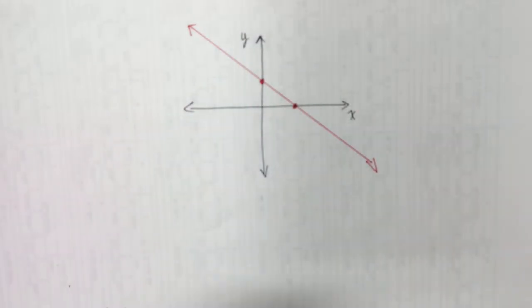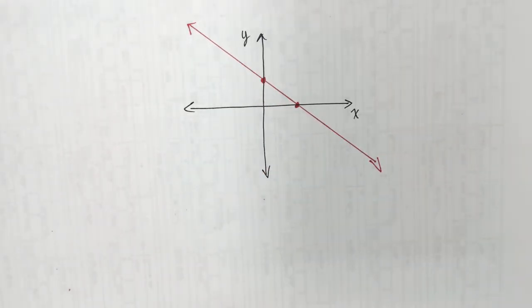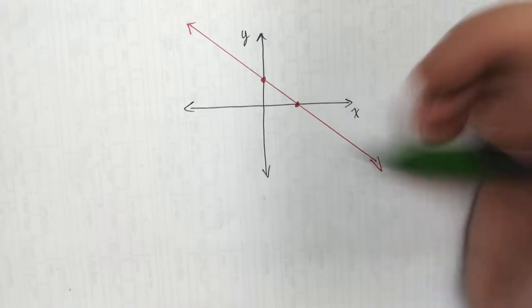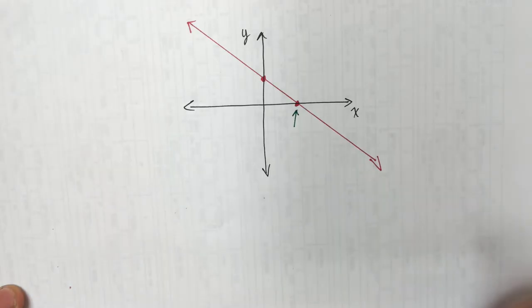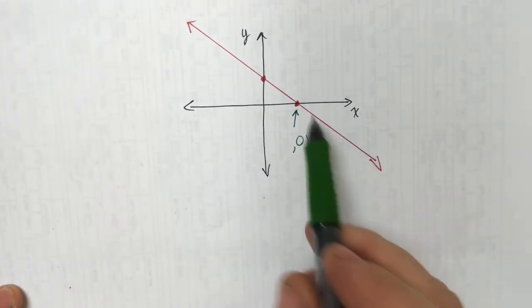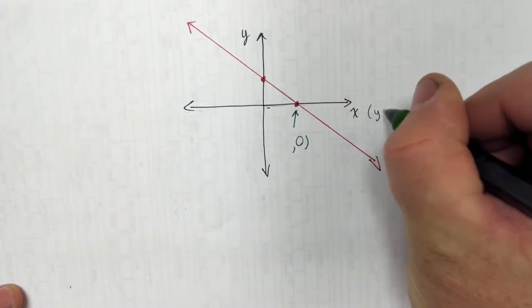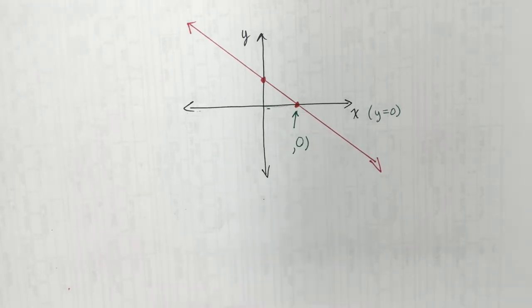I'll pick two points — connect the line through those two points — it's not going to go through quadrant three. Those two points have exactly to do with intercepts. This point on the x-axis: y has to be zero there. The x-axis is the equation y equals zero. I don't know the x value, but y must be zero. Sam, what number should x be? Three. Fantastic.